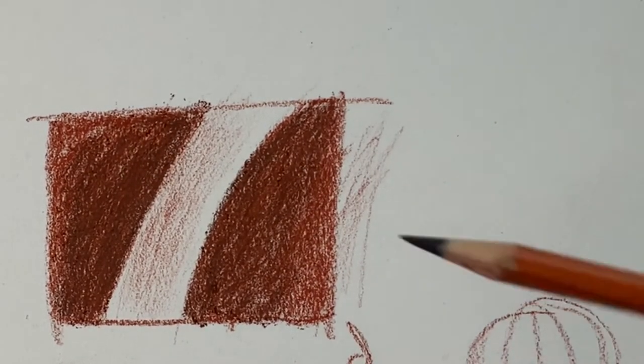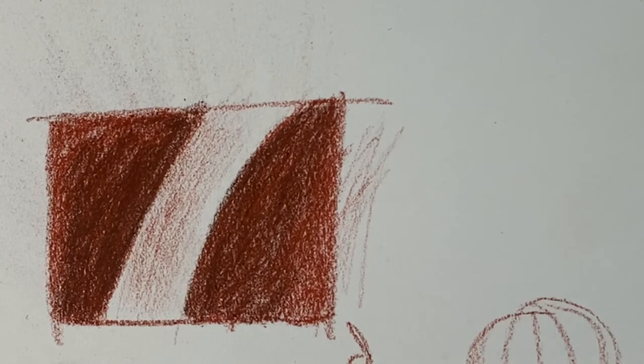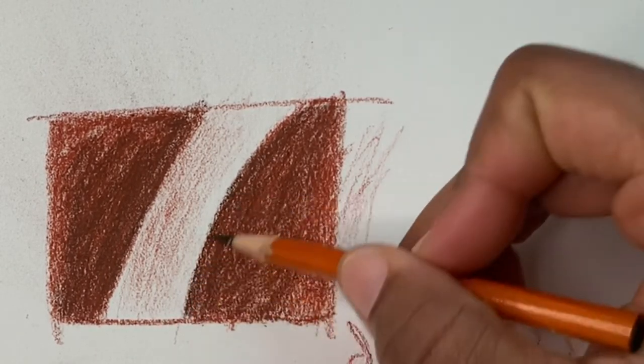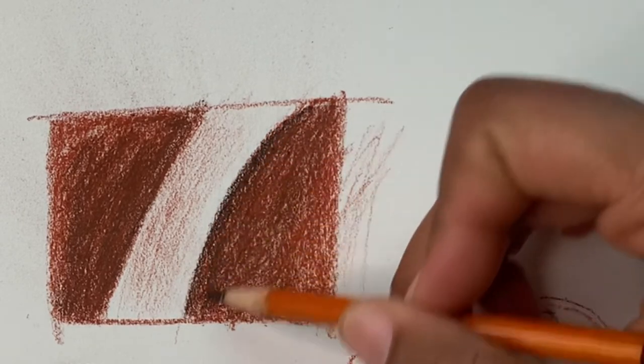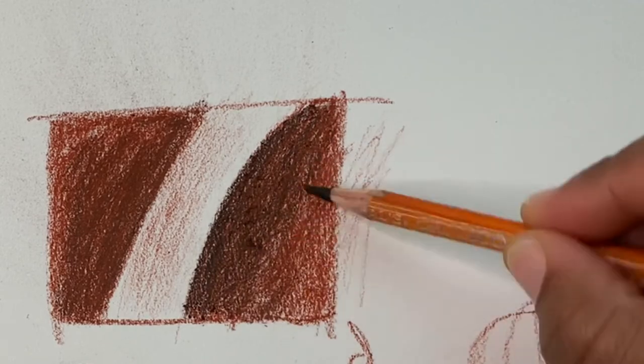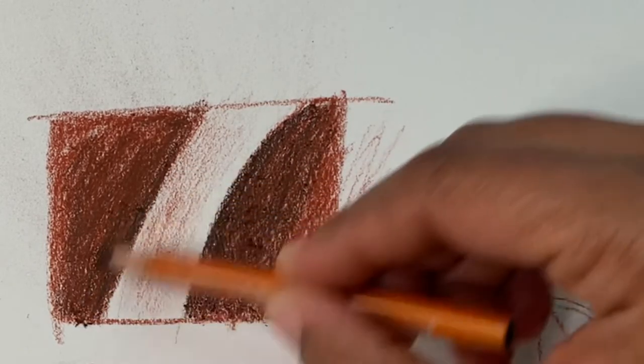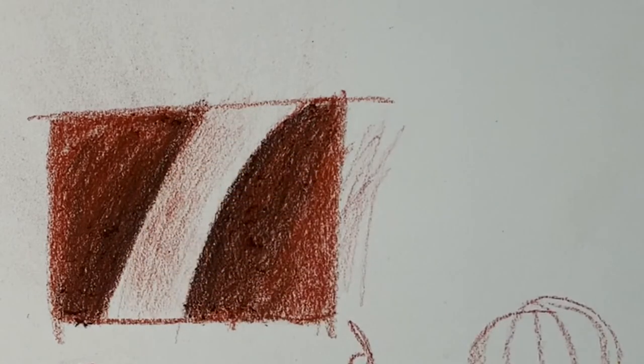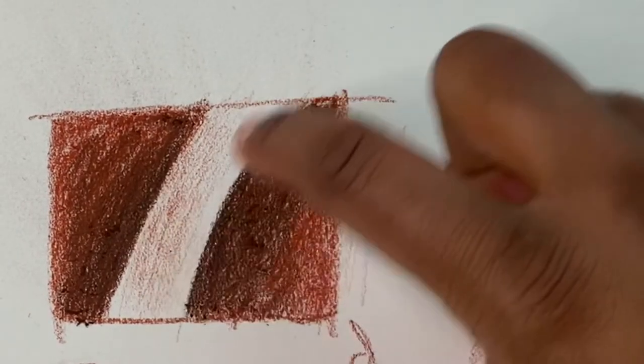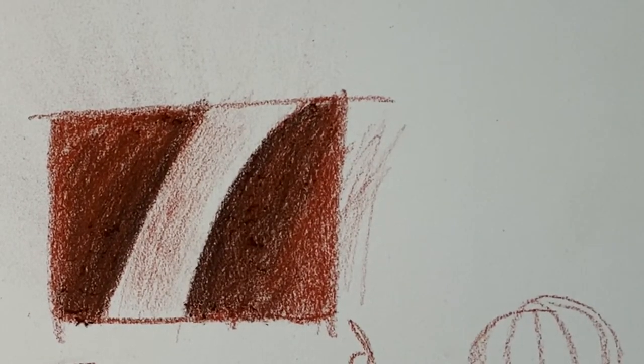If I need to go darker, I have a 2B here and I'll just solidify that edge. Now if I find I need to get darker, because once I go darker here and here that really looks really light, so then I'll go back into that.